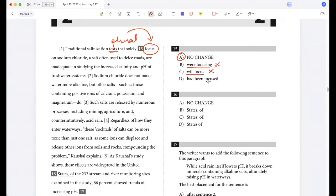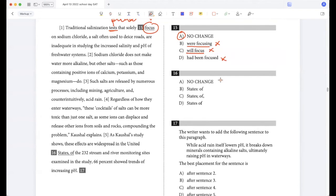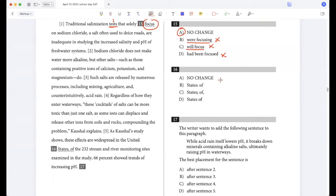Sodium chloride does not make water more alkaline, but other salts such as those containing positive ions of calcium, potassium, and magnesium do. Such salts are released by numerous processes including mining, agriculture, and counterintuitively acid rain. Regardless of how they enter waterways, these cocktails of salts can be more toxic than just one salt, as some ions can displace and release other ions from soils and rocks, compounding the problem. Kaushal explains.